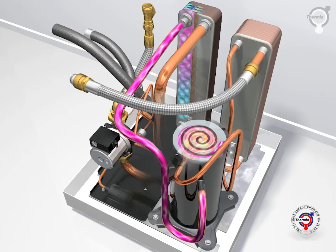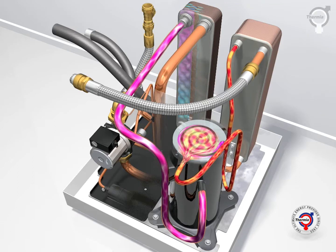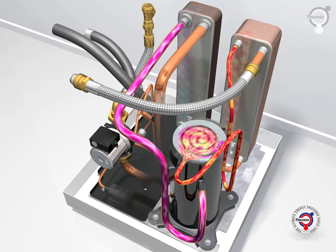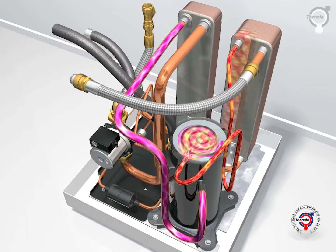The hot refrigerant gas continues into the condenser. Here, heat is transferred from the gas to the water coming from the heating system's return line.